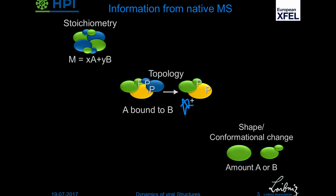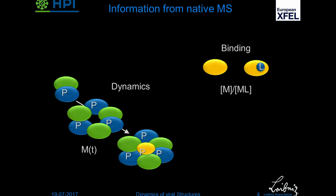We can do that in a more or less quantitative fashion because the signal intensities usually reflect pretty well the concentrations in solution. That comes in handy if you want to study other processes, for example ligand binding — that's one of the things I will talk about today. So you can determine the ratio of the unbound protein to the ligand-bound protein and determine KDs and such. You can also study the mass of your complex in a time-resolved fashion to look at, for example, protein complex assembly.